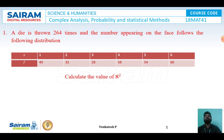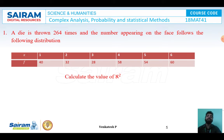Example 1: A die is thrown 264 times and the number appearing on the face follows the distribution: x = 1, 2, 3, 4, 5, 6 with frequencies f = 40, 32, 28, 58, 54, 60 respectively. Calculate the value of chi-square.